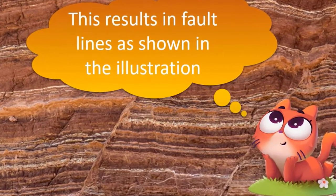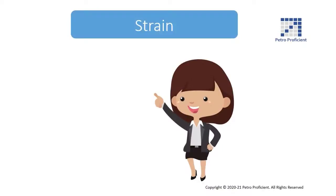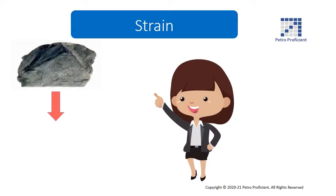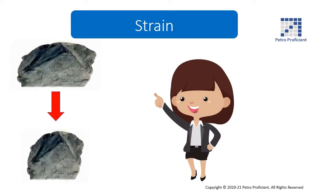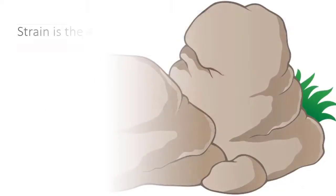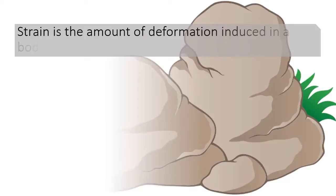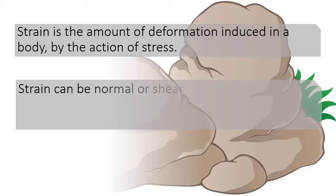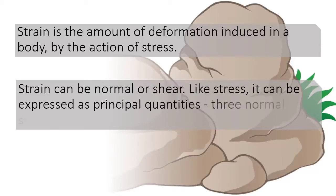The response to stress is called strain. Rock will show strain by changing shape. Strain is the amount of deformation induced in a body by the action of stress. Strain can be normal or shear. Like stress, it can be expressed as principal quantities as three normal strains along perpendicular axis.